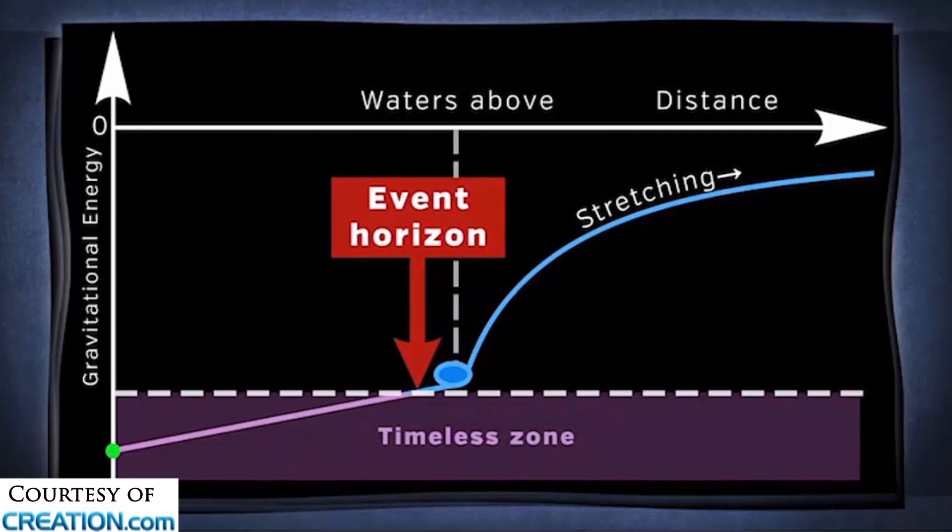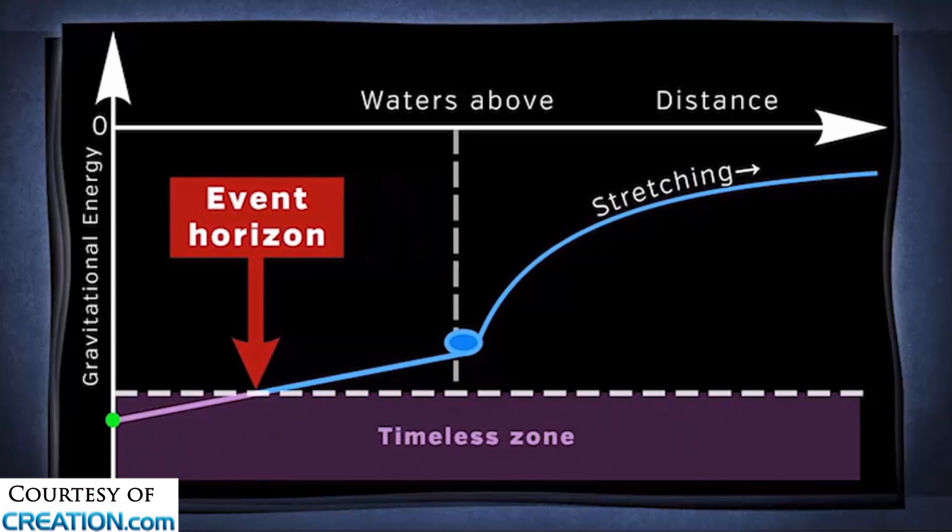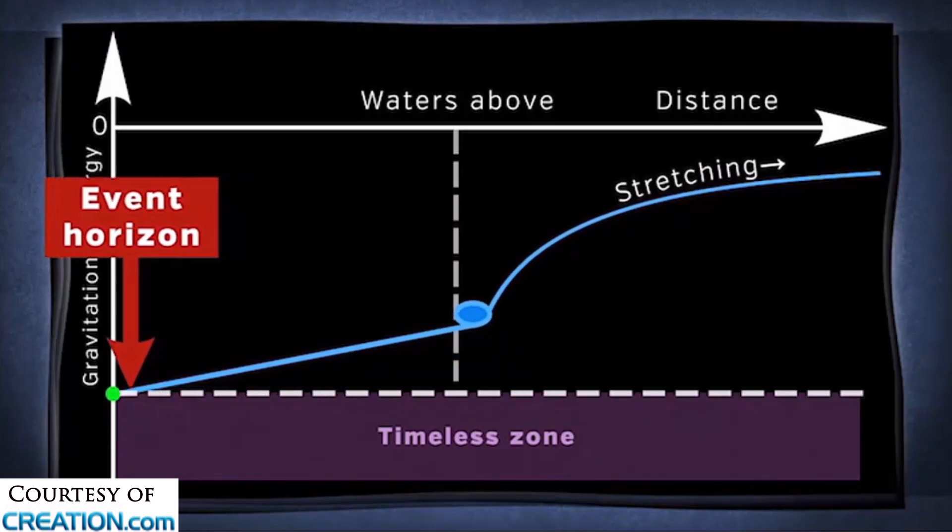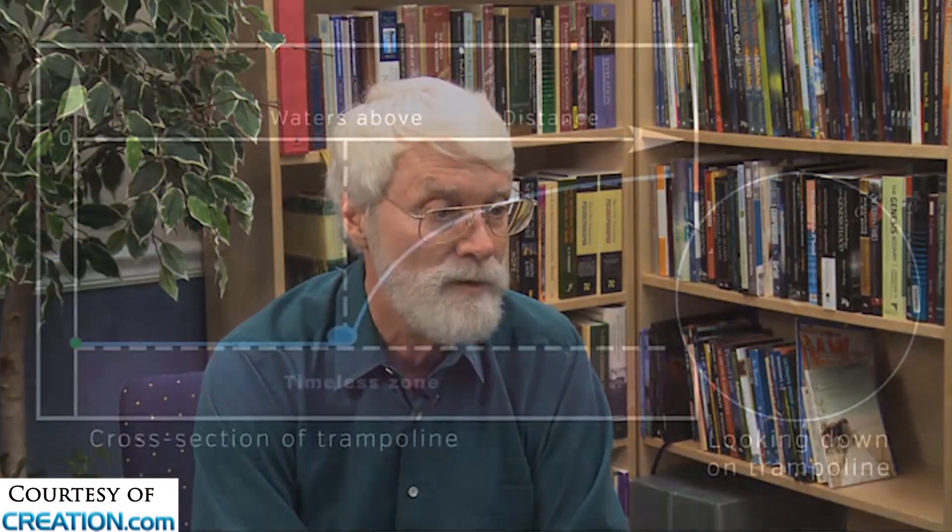And so as it moves to the left, more and more of the galaxies pop out of the timeless zone and start emitting light again. You notice it moved inward all the way to the center. And the last thing that the event horizon hits is at distance zero, which is at the Earth. So the Earth is the last thing to actually come above the event horizon.